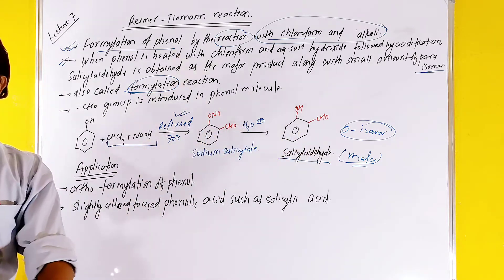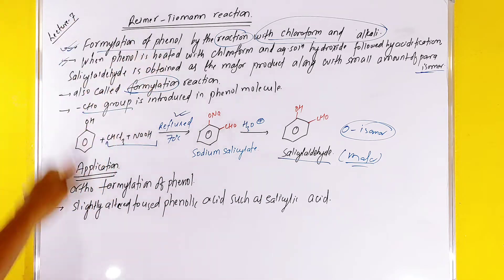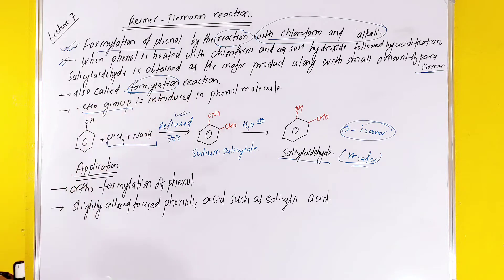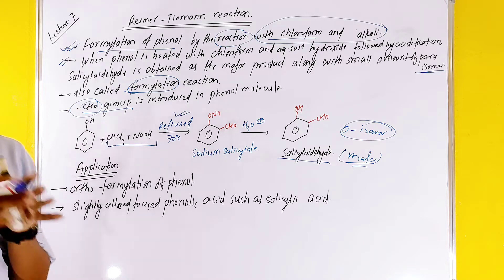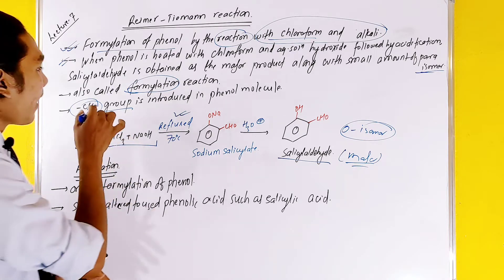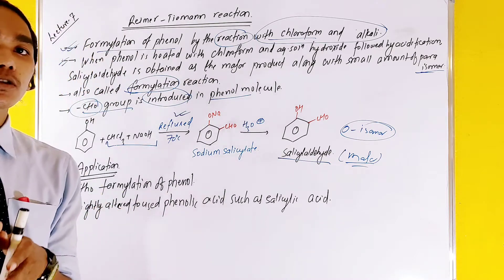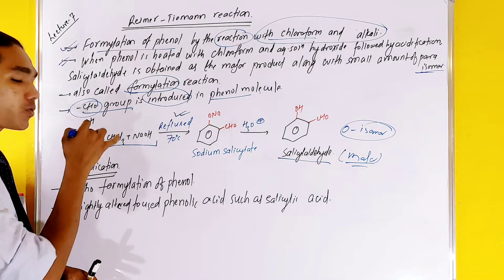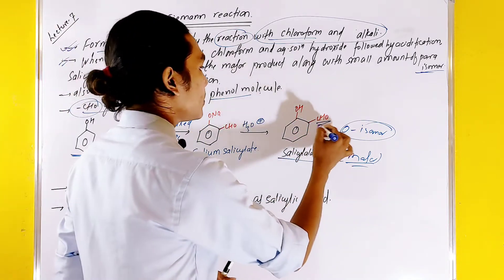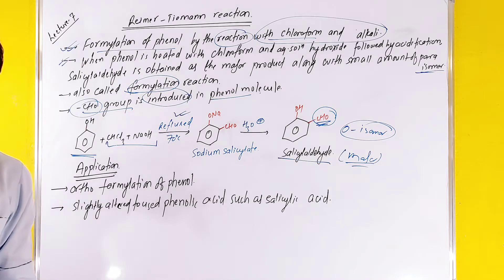This is the main process of formylation. We add formyl groups — that is, we add a CHO group into the phenol molecule. This is the CHO group we are adding.